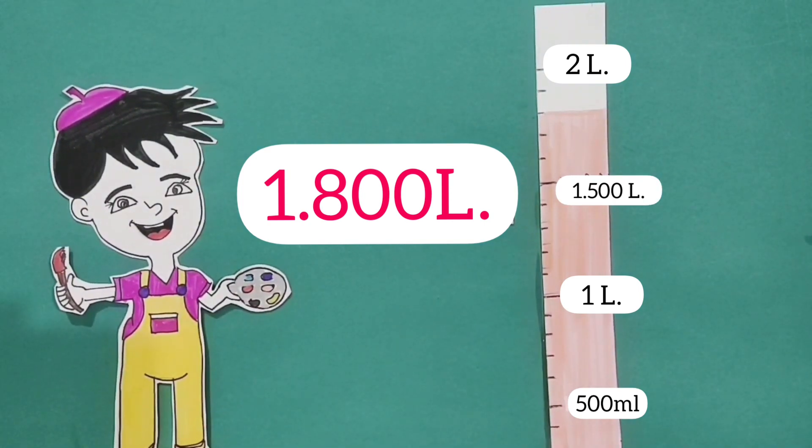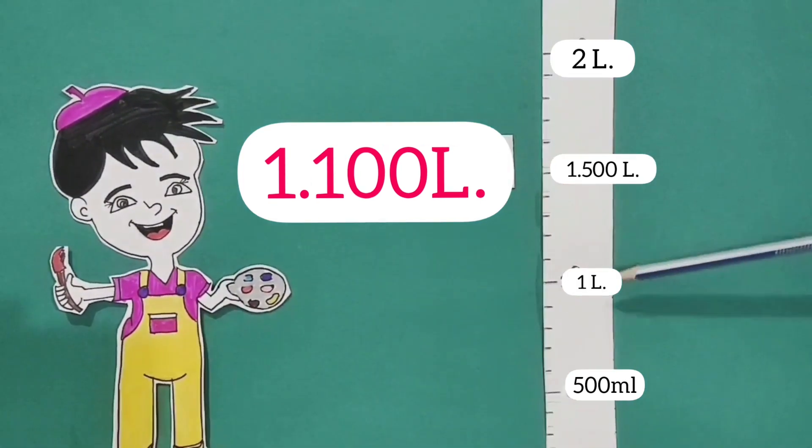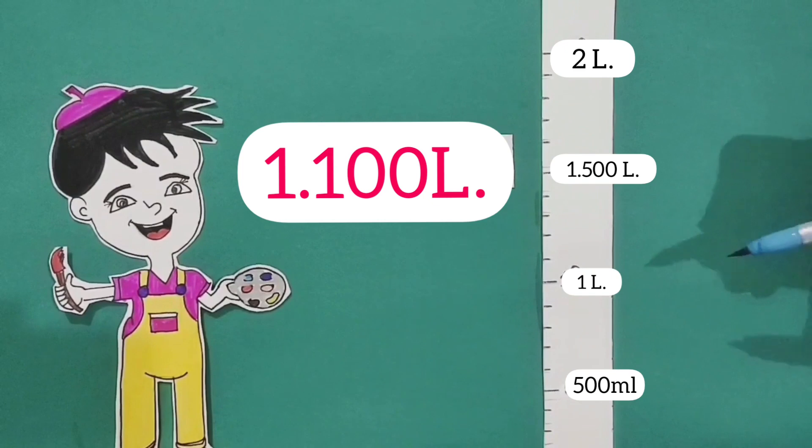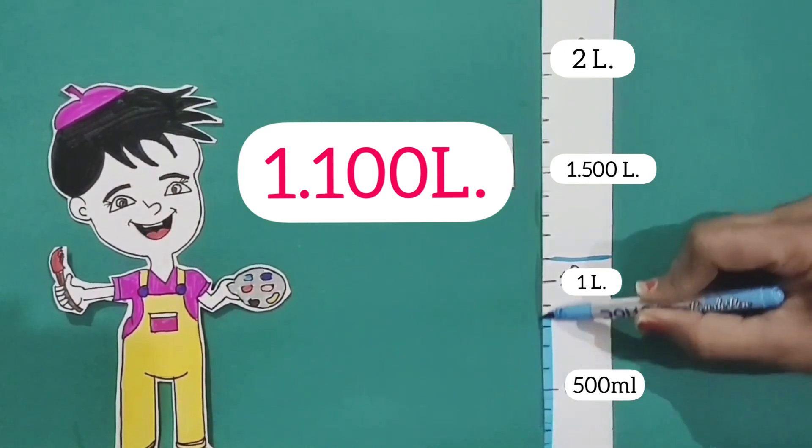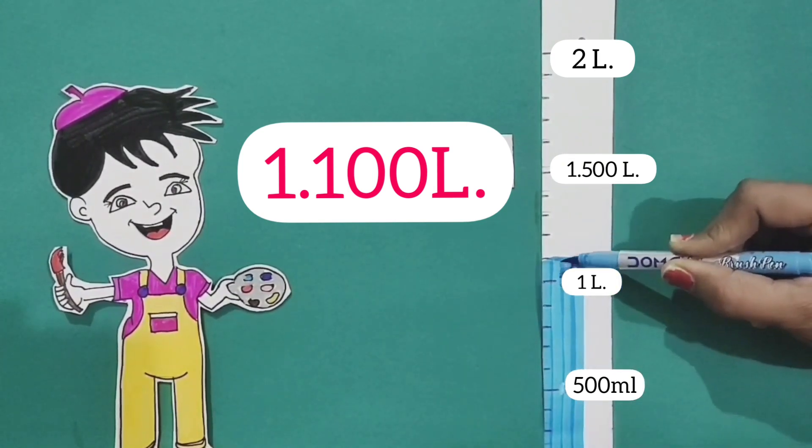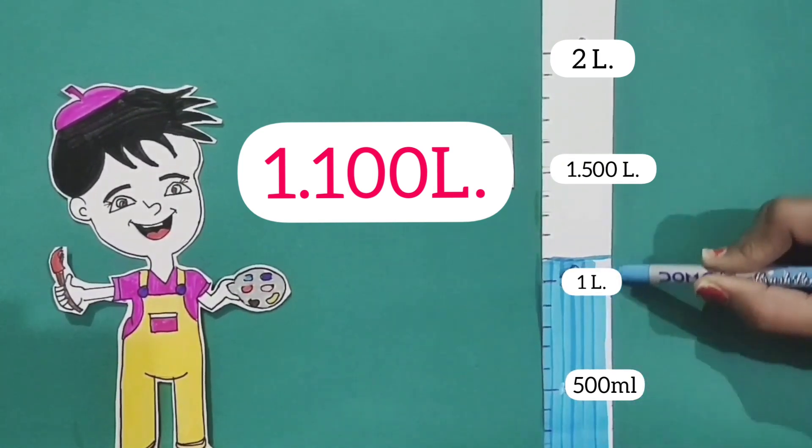And now, the next amount is 1.100 liter. Come, now let's color it. So, first, we'll mark 1.100 liter. That's up to first subdivision after 1 liter. And we'll color it.